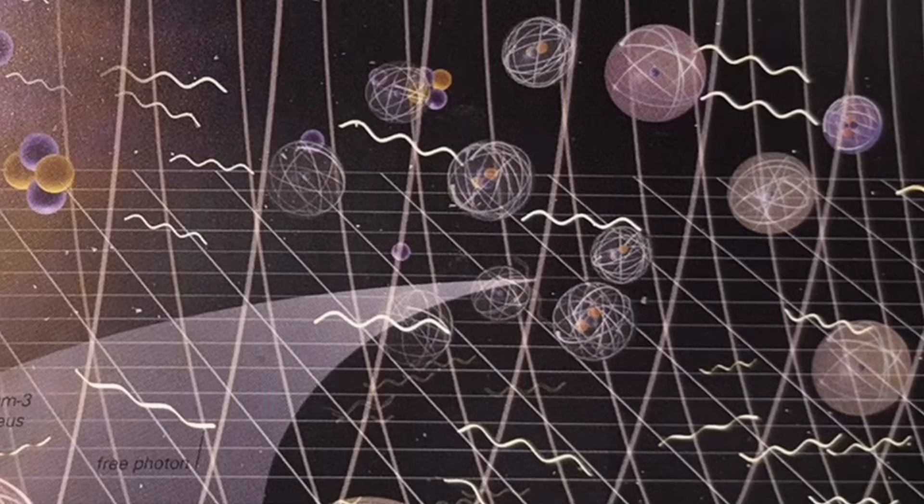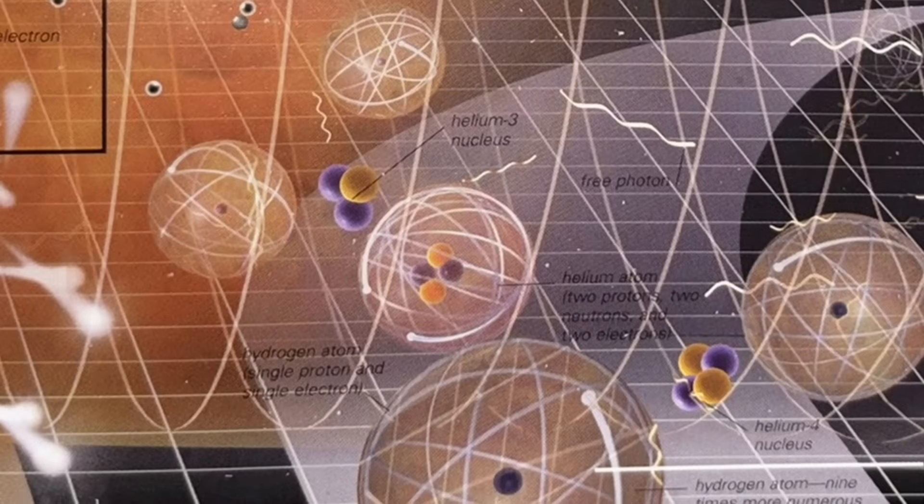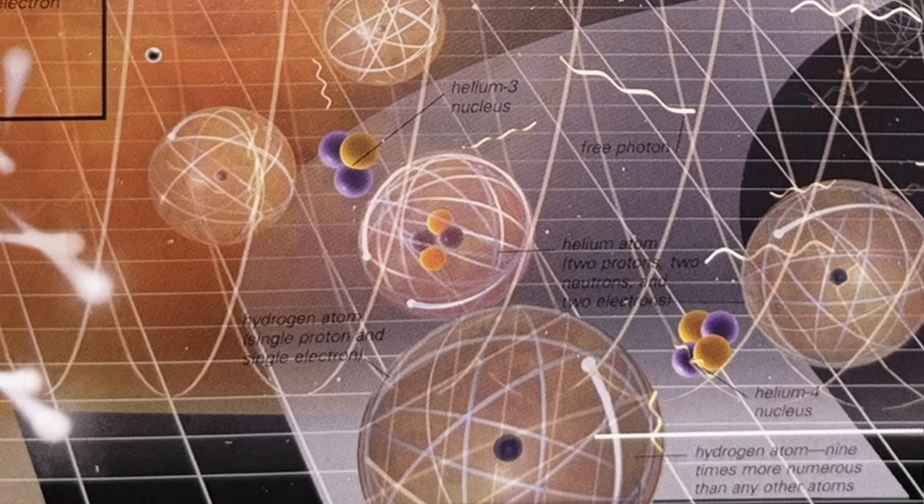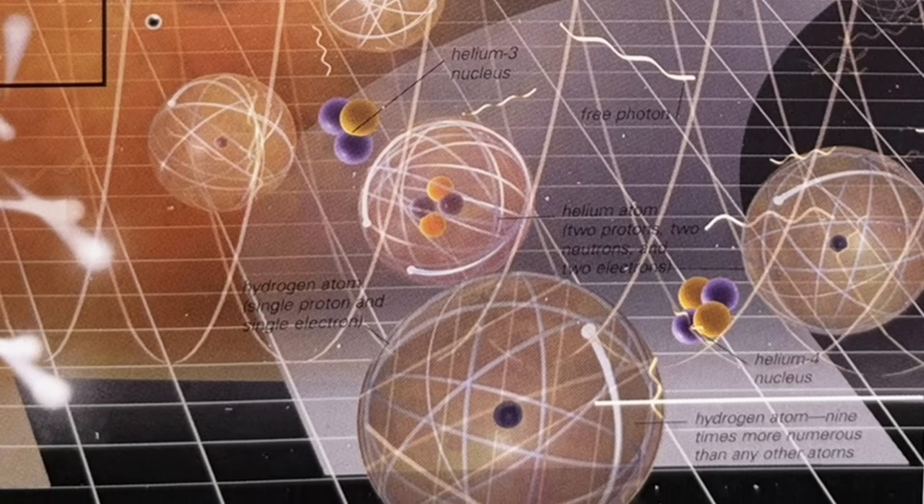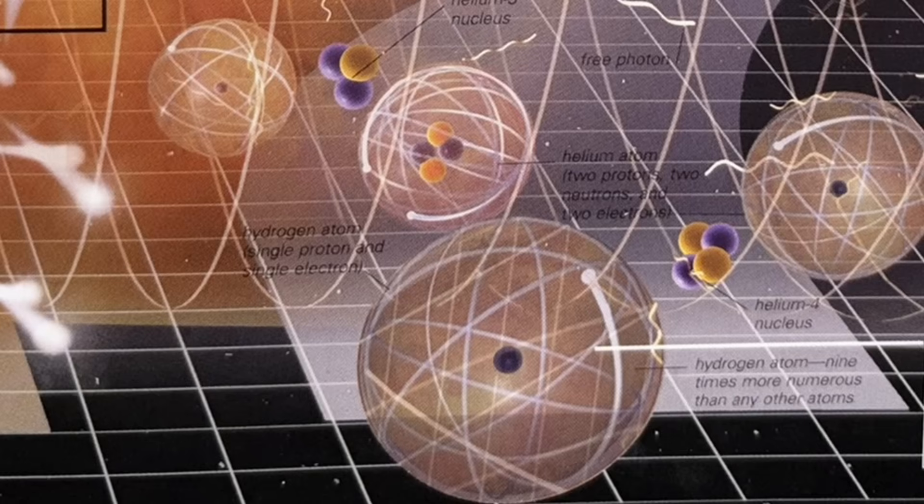378,000 years after the Big Bang, the recombination era began. The temperature of the universe at this point had decreased to about 4,940 degrees Fahrenheit. The observable universe was about 84 million light years in diameter. The universe had now cooled enough for electrons to lose enough energy so they could be captured by nuclei. This allowed neutral hydrogen and neutral helium atoms to form for the first time. About nine hydrogen atoms were made for each helium atom. A few lithium and deuterium atoms also formed. Once electrons were bound, there were far fewer free electrons for photons to scatter off of.